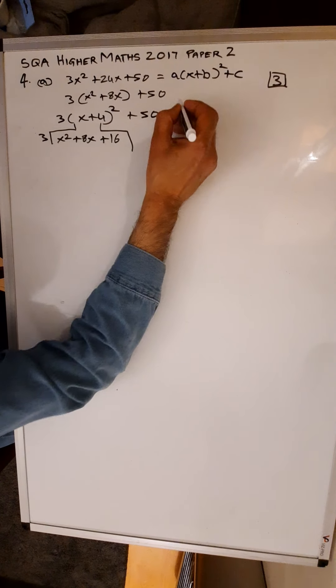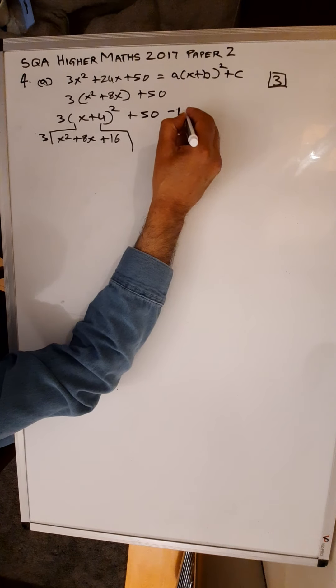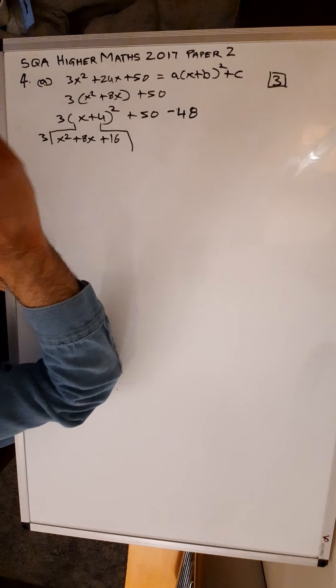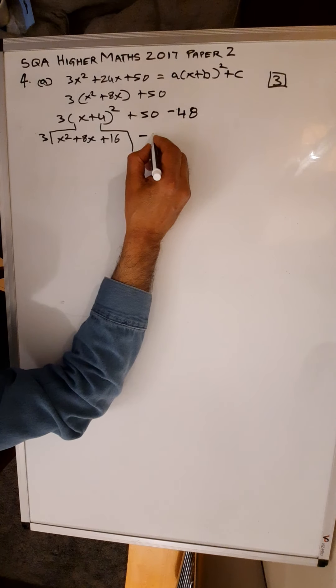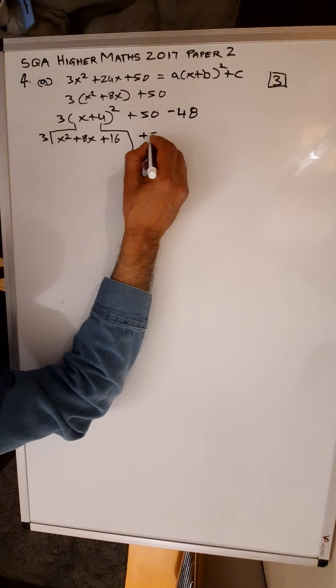That is extra. So you need to take that away because you kept your constant outside. So you take the 48 away. So now it is going to give you plus 50 minus 48.